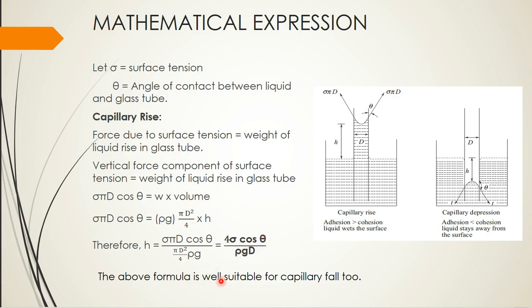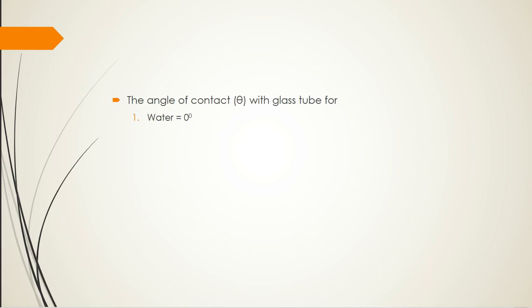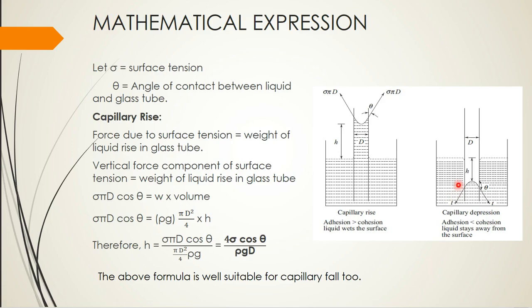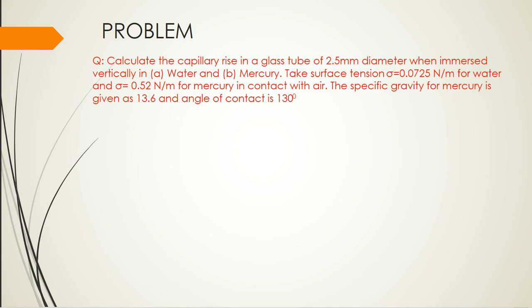This formula is also suitable for capillary fall, where the angle of contact theta will differ. The angle of contact theta with the glass tube for water is generally taken as zero degrees. For mercury it is 128 to 130 degrees. So water has theta = 0° and mercury has theta = 128–130°.